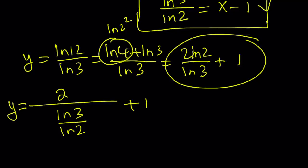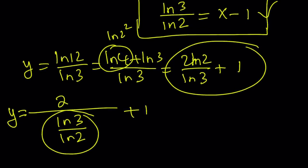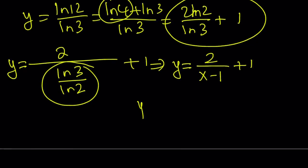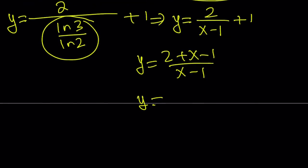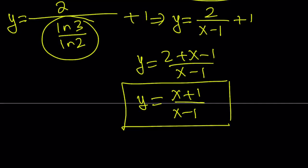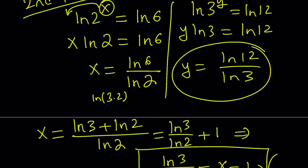And now we know that ln 3 over ln 2 can be written as x minus 1. So we can replace it with x minus 1. So y equals 2 over x minus 1 plus 1. And if you make a common denominator, you get 2 plus x minus 1 over x minus 1. And finally, y becomes x plus 1 divided by x minus 1. So this allows us to express y in terms of x. And this brings us to the end of the second method.